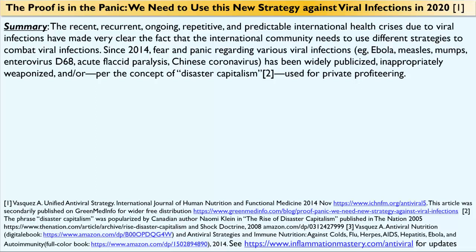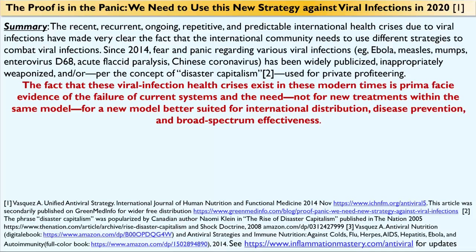As I said in 2014, the proof is in the panic. We need to use a new strategy against viral infections. The recent, recurrent, ongoing, repetitive, and predictable international health crises due to viral infections have made very clear that the international community needs to use different strategies to combat these viral infections. The fact that these viral infection health crises exist in modern times is prima facie evidence of the failure of current systems and the need not for new treatments within the same model, but for a new model better suited for international distribution, disease prevention, and broad-spectrum effectiveness.